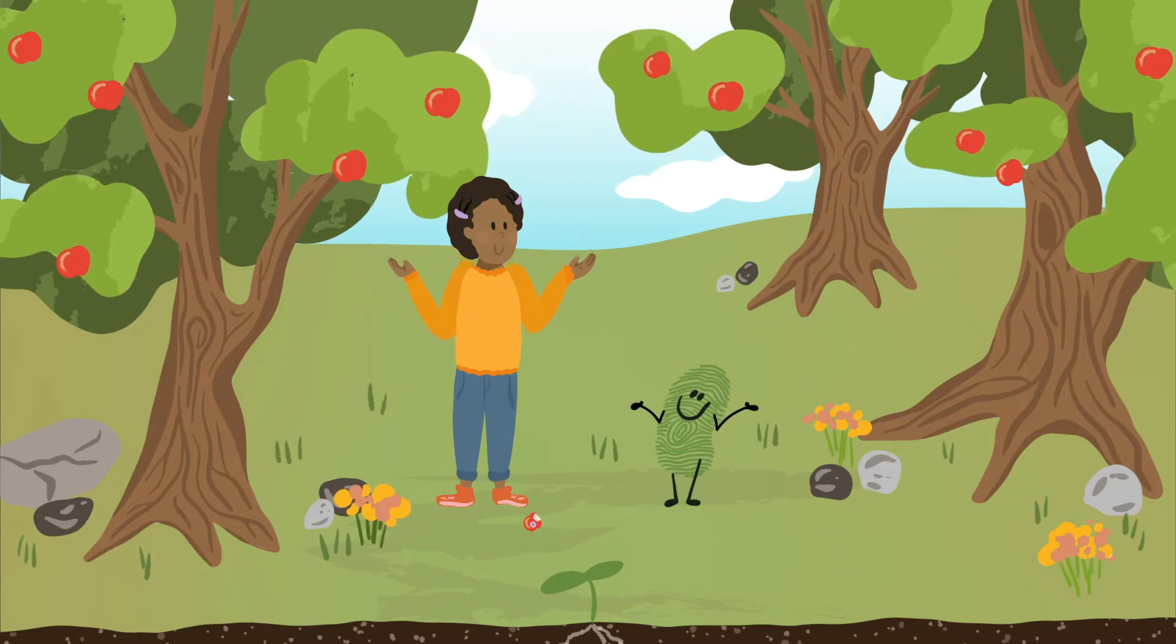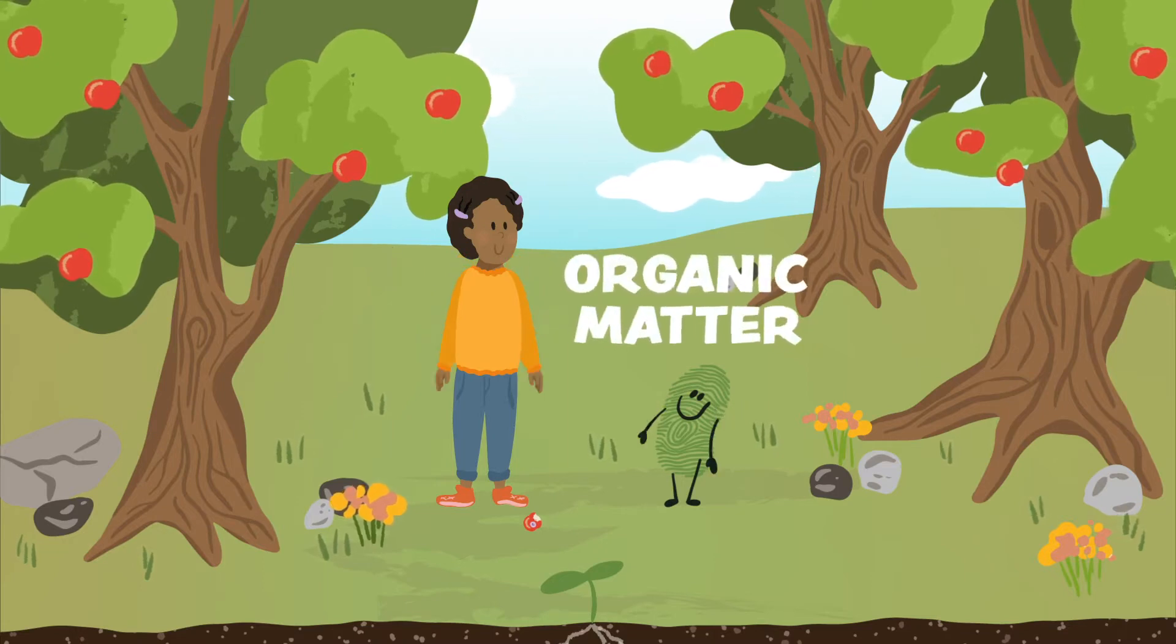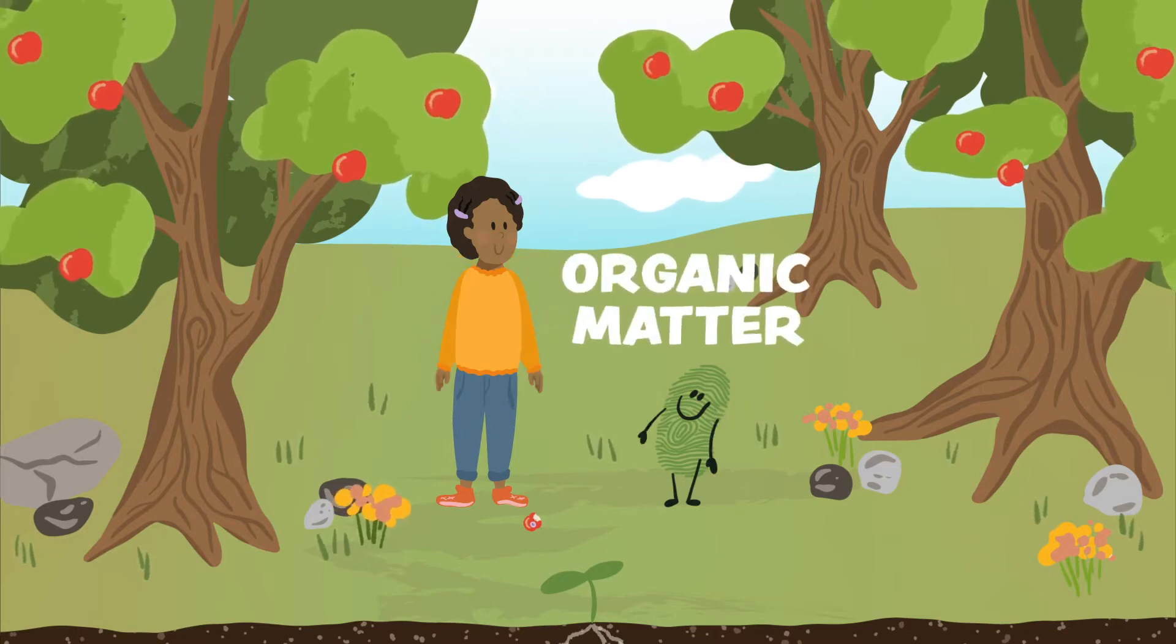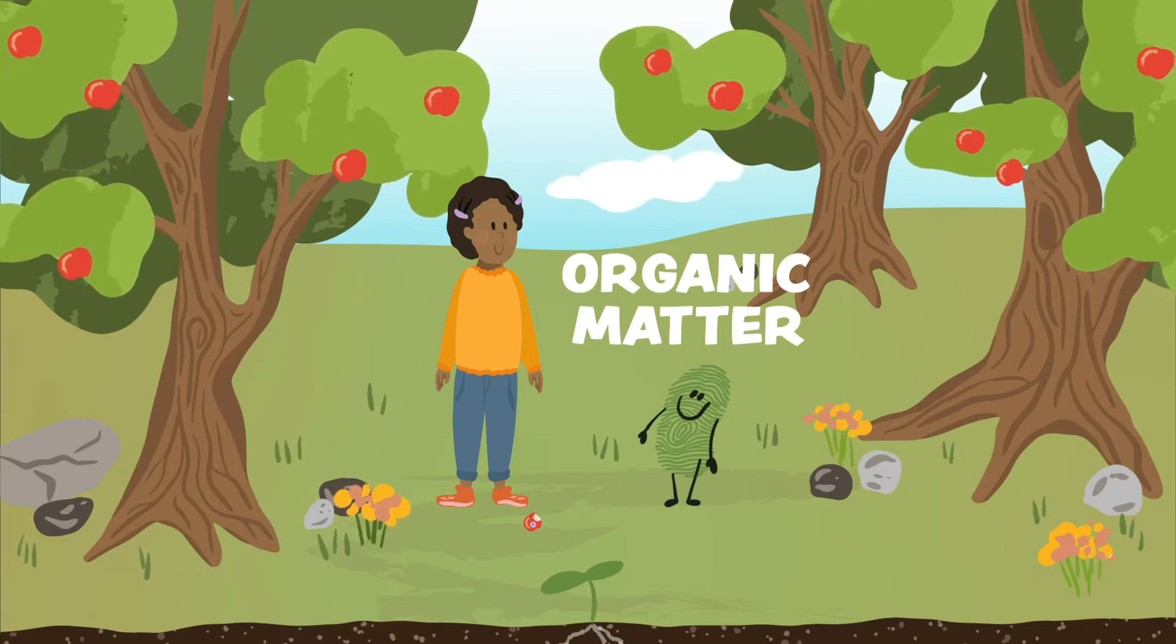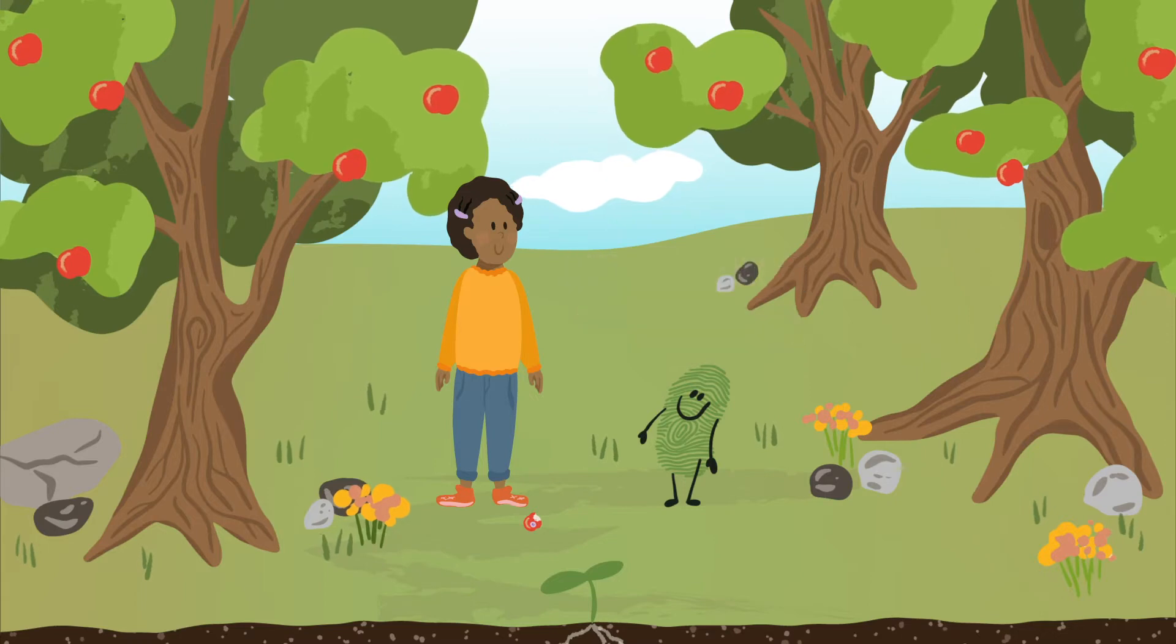But how? Earlier, we learned about organic matter, which is this mix of living and dead things in our soil. The organic matter is very important for all life on Earth because organic matter is full of carbon.